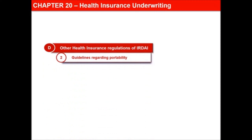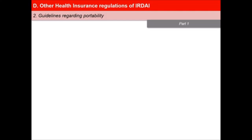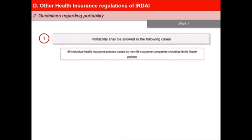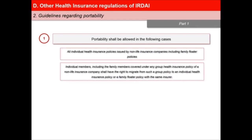In this next video of the lesson, Health Insurance Underwriting, we will learn about guidelines regarding portability as provided under health insurance regulations of IRDAI. IRDAI has brought out very clear guidelines regarding portability of life and health insurance policies. First, portability shall be allowed in the following two cases: for all individual health insurance policies issued by non-life insurance companies including family floater policies; and for individual members including the family members covered under any group health insurance policy of a non-life insurance company.